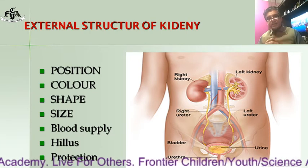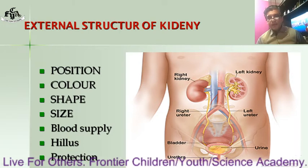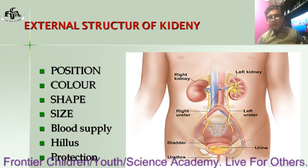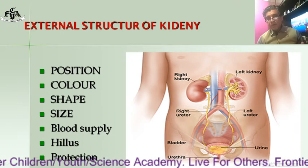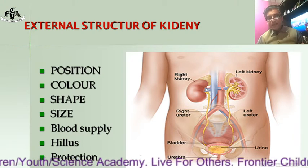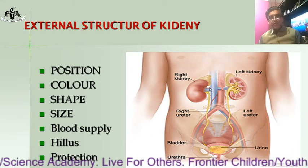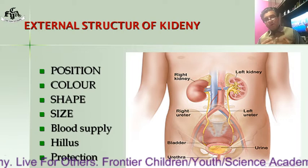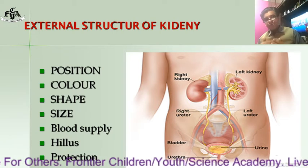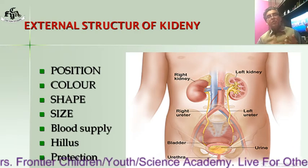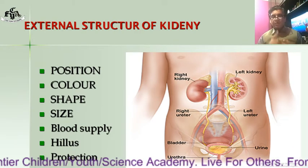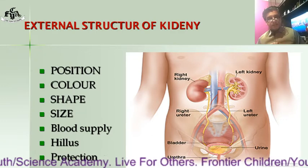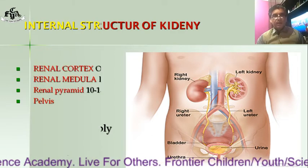Regarding blood supply, as you can see in the diagram, the blood vessels — the renal artery and renal vein — enter or come out through a region called the hilum. For protection, there is a membrane around the kidney called the peritoneum, which provides protection. Extra protection is also provided by some of the lower ribs, and fats surrounding the kidney help protect it against injuries.